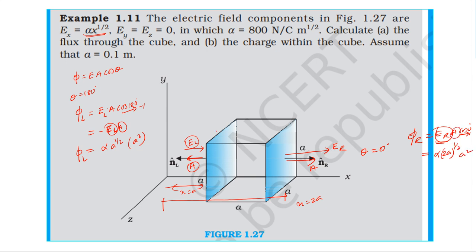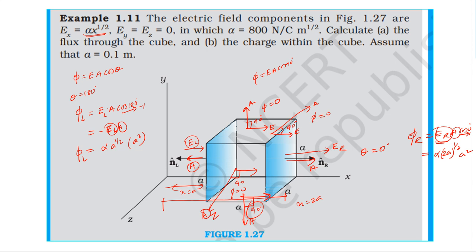For the top surface, the electric field is in the x-direction while the area vector is in the y-direction, so the angle is 90 degrees and the flux is zero. Similarly, for the bottom surface the area is downward and the field is in the x-direction, angle 90 degrees, flux zero. For the front and back faces, the area vectors are in the z-direction while the field is in the x-direction, so the angle is 90 degrees and the flux through each is zero.